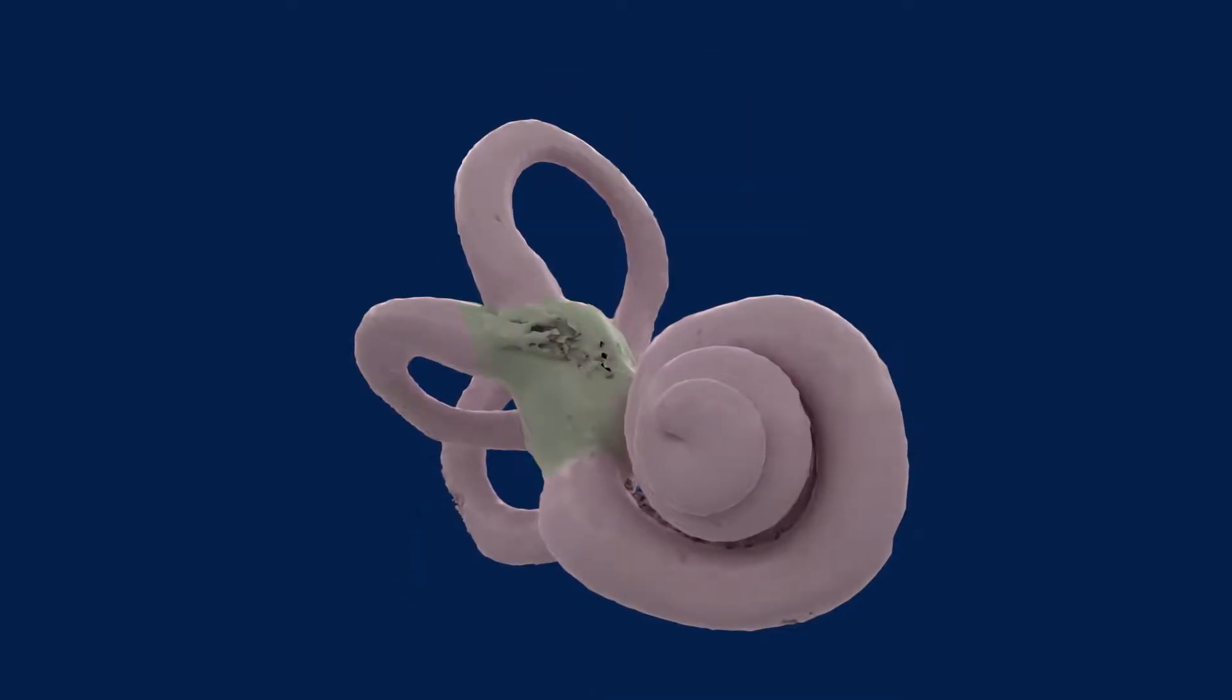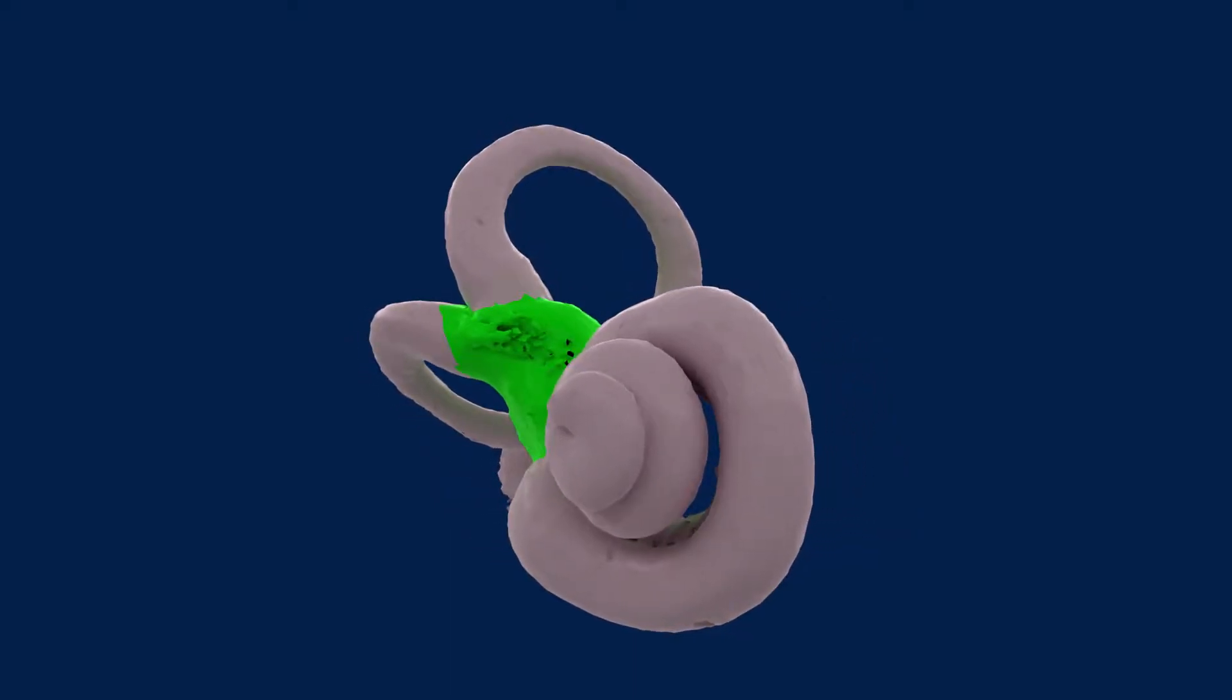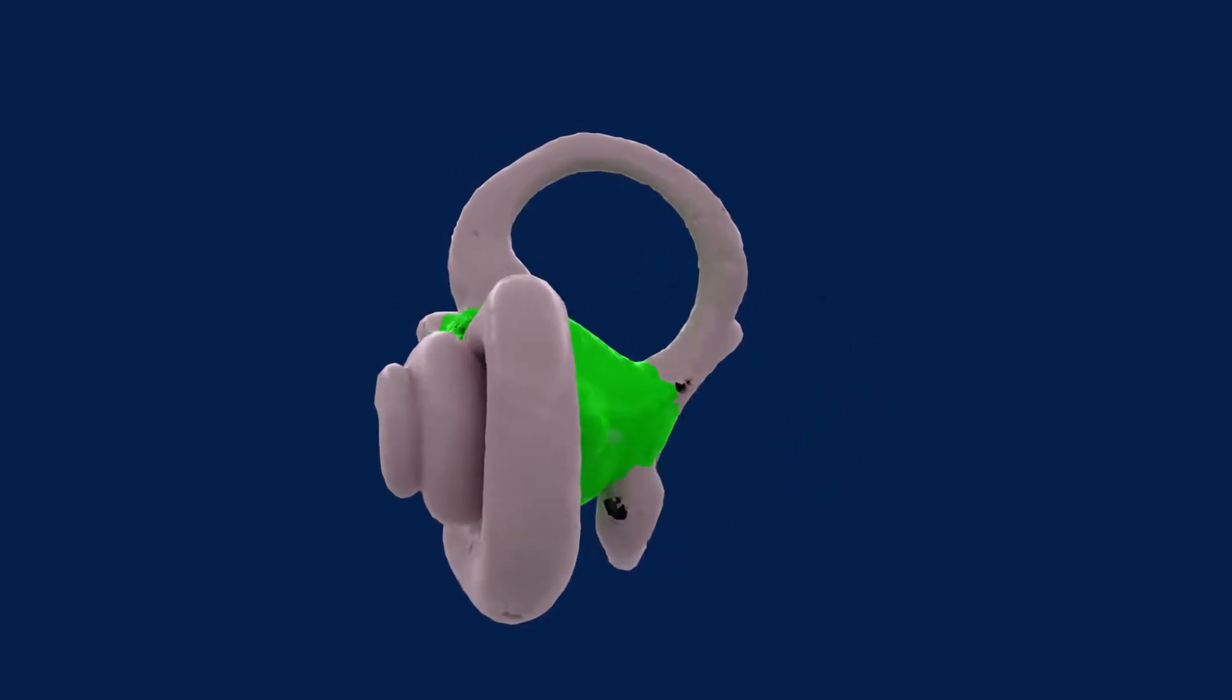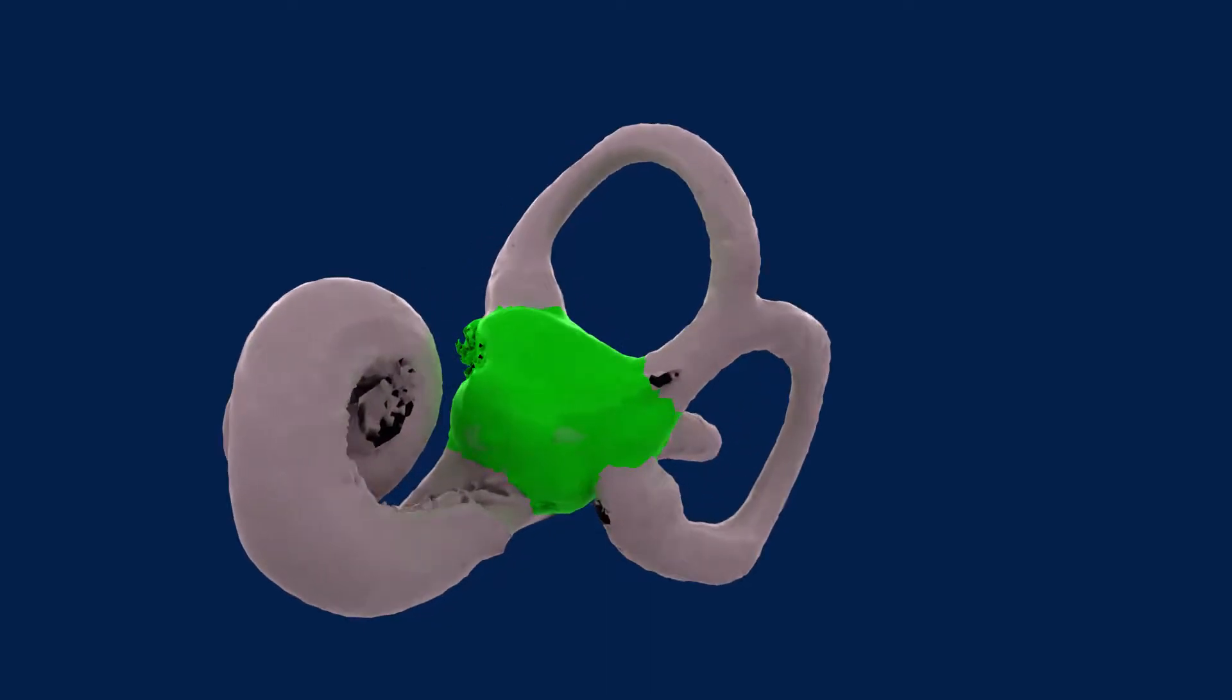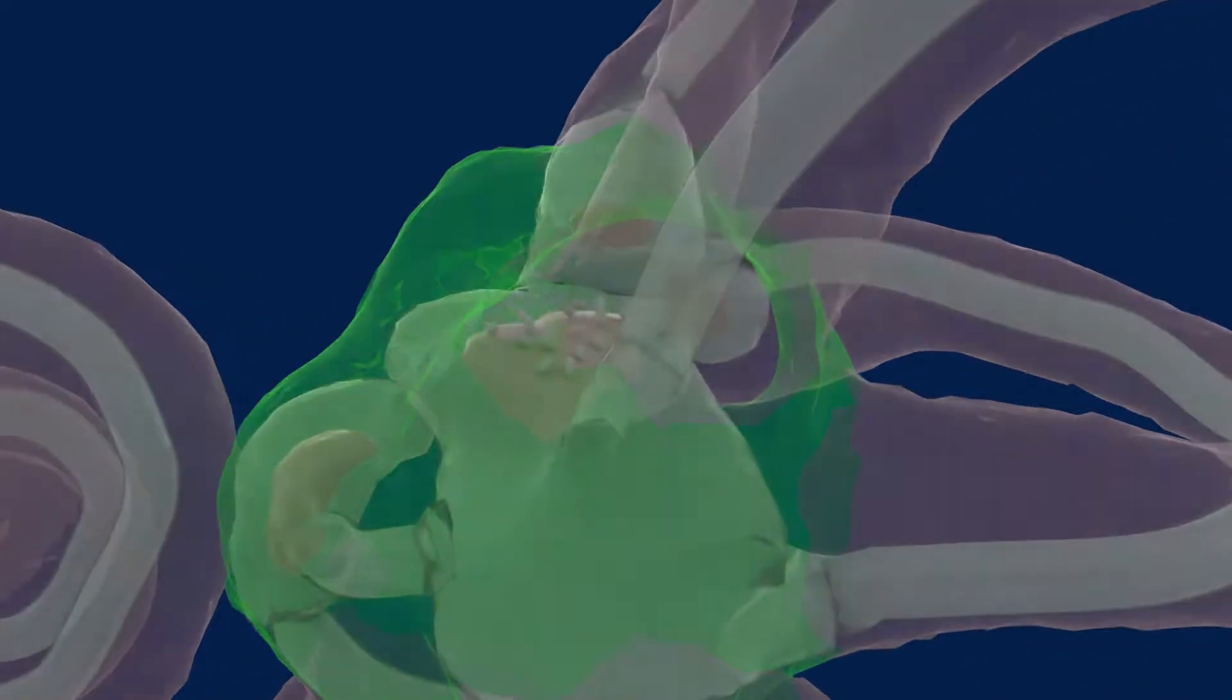Now for the other part. The vestibule senses linear movements and orientation relative to the direction of gravity. It also does this with hair cells embedded in a jelly-like material, but in a different way.